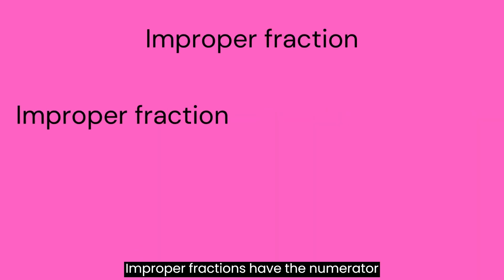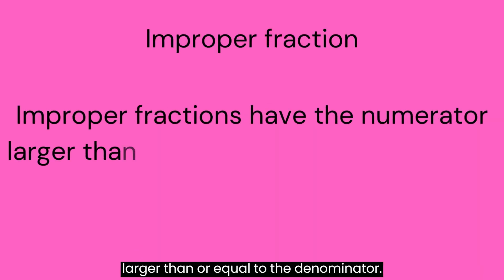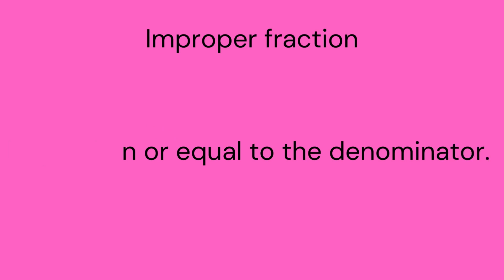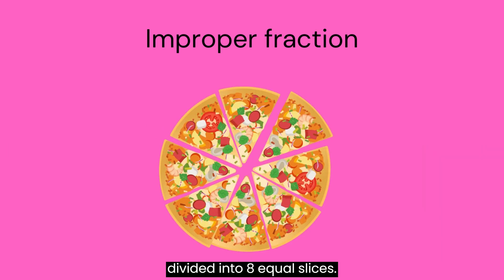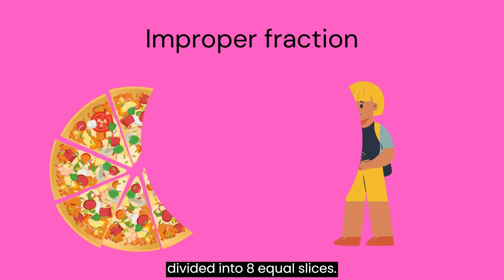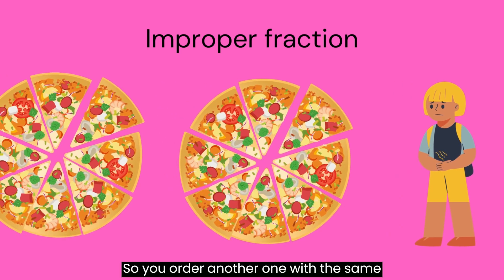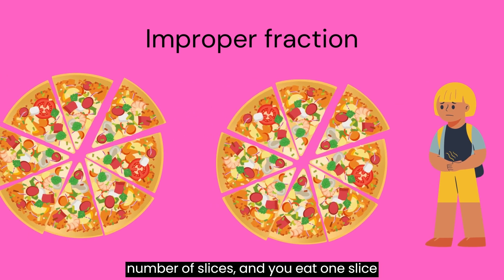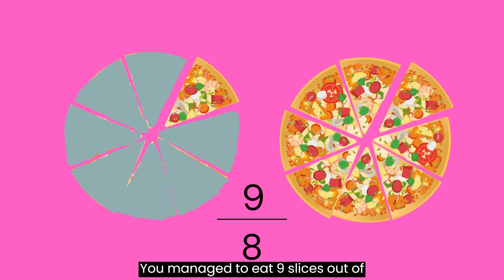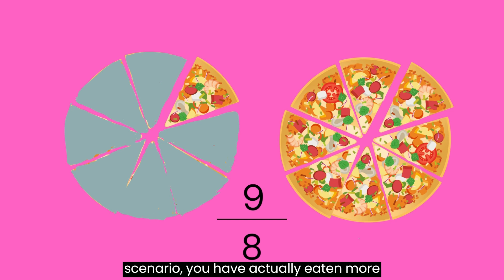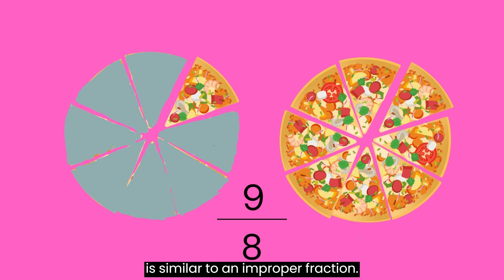Now let's talk about improper fractions. Improper fractions have the numerator larger than or equal to the denominator. Imagine you have a large pizza divided into eight equal slices. Now let's say you're really hungry, so you order another one with the same number of slices and you eat one slice from the second pizza. You manage to eat nine slices out of those eight slices. In this scenario, you have actually eaten more than a whole pizza. This situation is similar to an improper fraction.